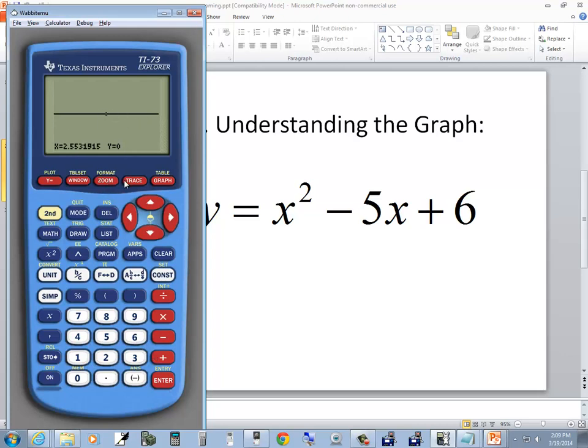Well, I've zoomed in so much now I can't see anything. To set it again back to your standard viewing window, you do zoom and choose 6, Z standard. So that was zooming in. Let's look at zoom box.